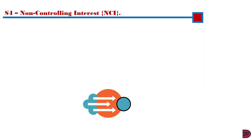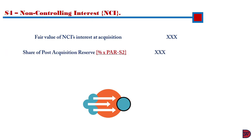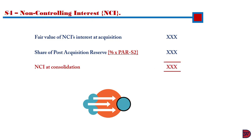Step 4 will be non-controlling interest, as tackled in the episode on non-controlling interest. We start with the fair value of the non-controlling interest at acquisition. Then you calculate its share of post-acquisition reserve — you pick the percentage holding of the non-controlling interest and apply it to the post-acquisition reserve found in step 2. The total will give you the figure for non-controlling interest on consolidation.